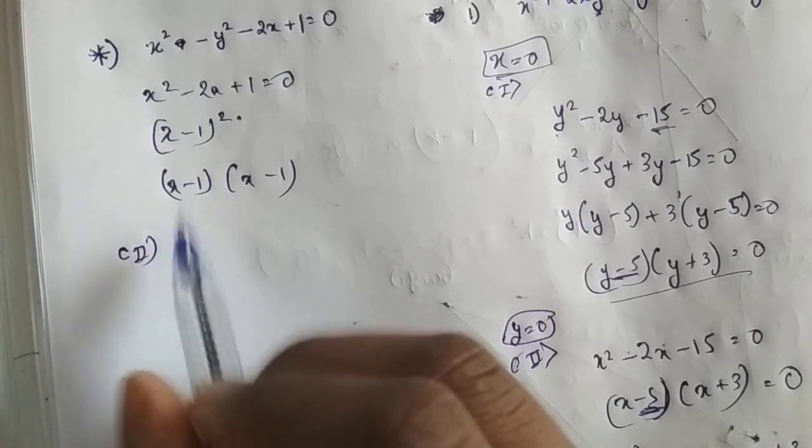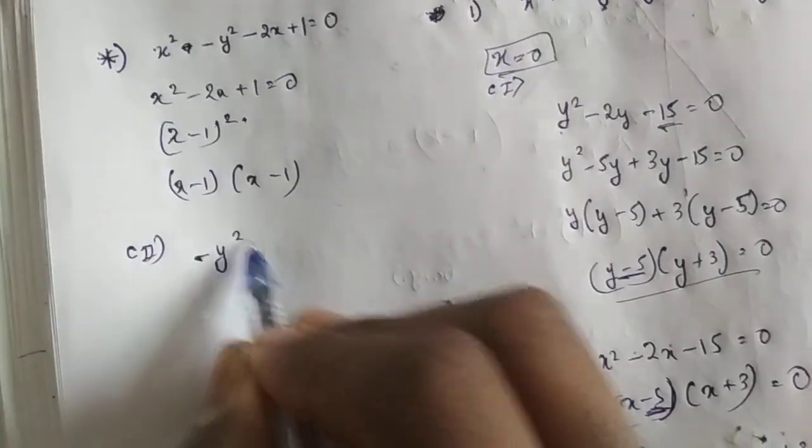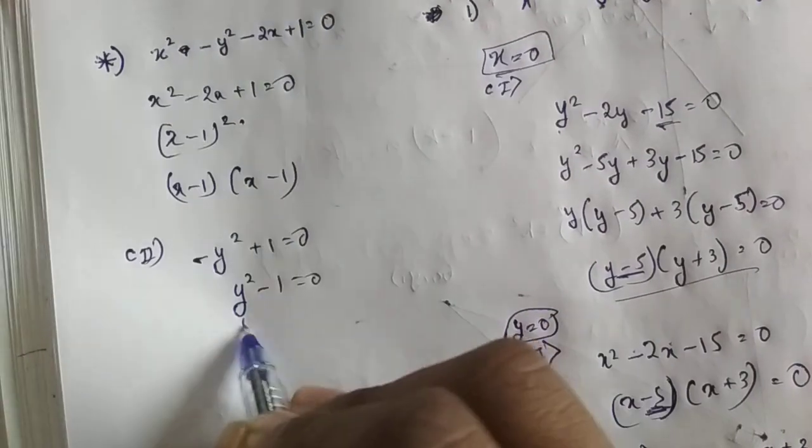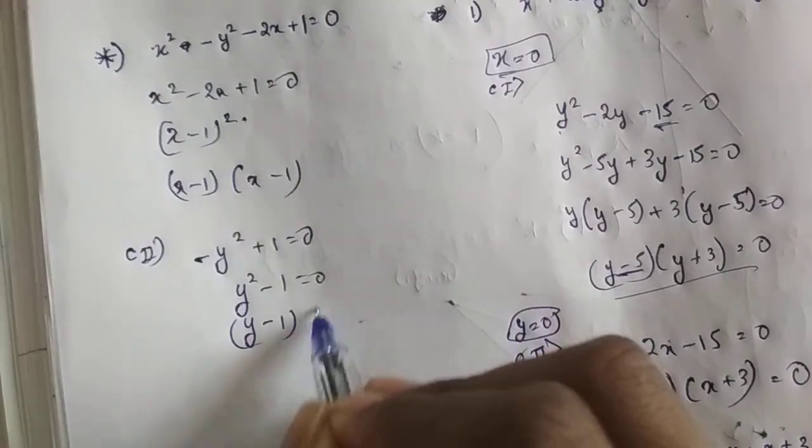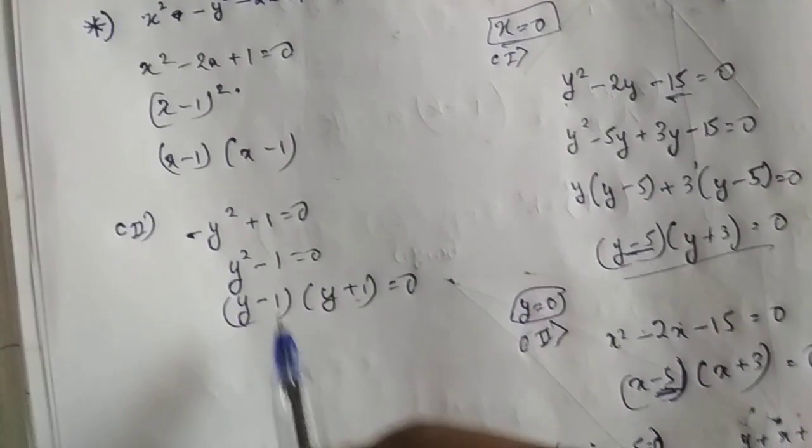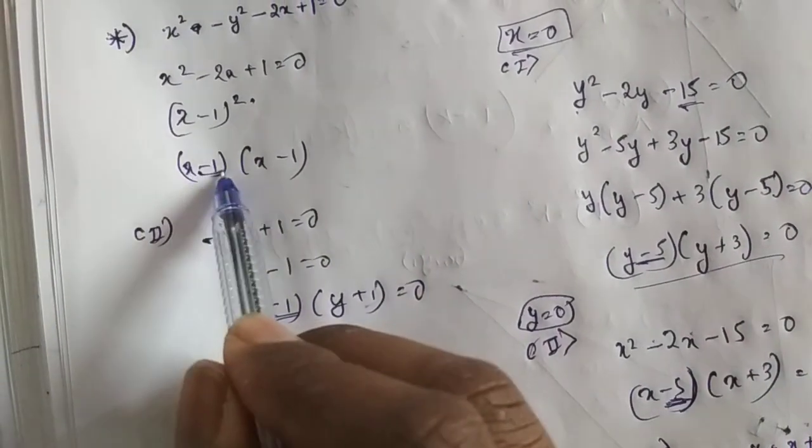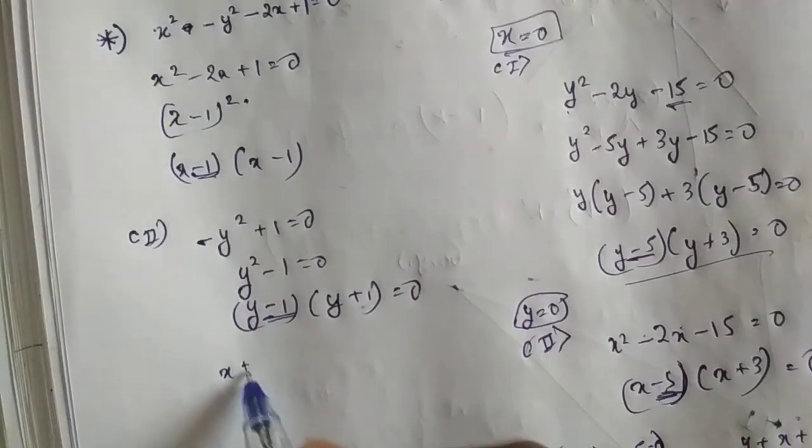We will put x equals to 0, so we get minus y square plus 1 equals to 0, y square minus 1 equals to 0, and y minus 1, y plus 1. Now you can see one coefficient or constant term is matching with this.